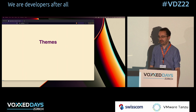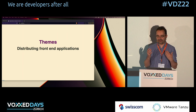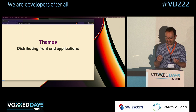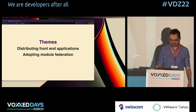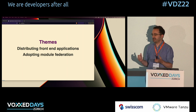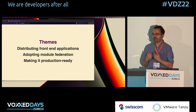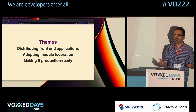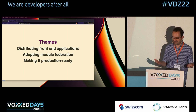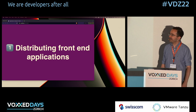There are three themes I want to cover in this talk. First is distributing frontend applications — how do you go about distributing them is one challenge we faced, and that led us to using microfrontends. Then it's adopting Module Federation, the technology we use to implement that. And lastly, what we have to do to make that production ready. Any technology, you can whip up an MVP, but having it in production is a slightly different thing. So let's start with distributing frontend applications.